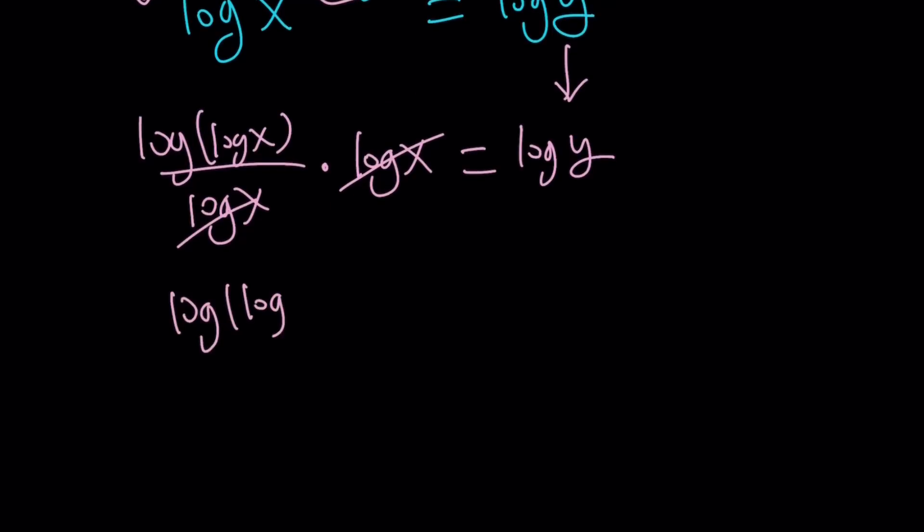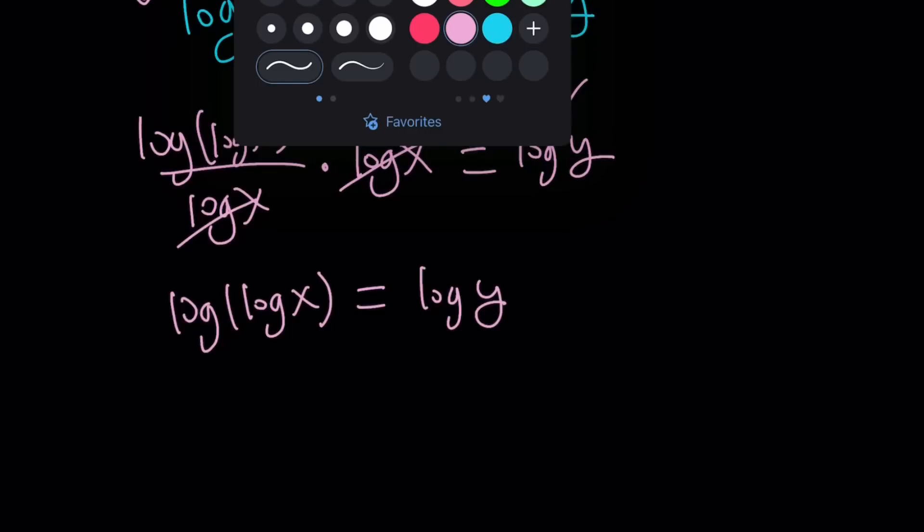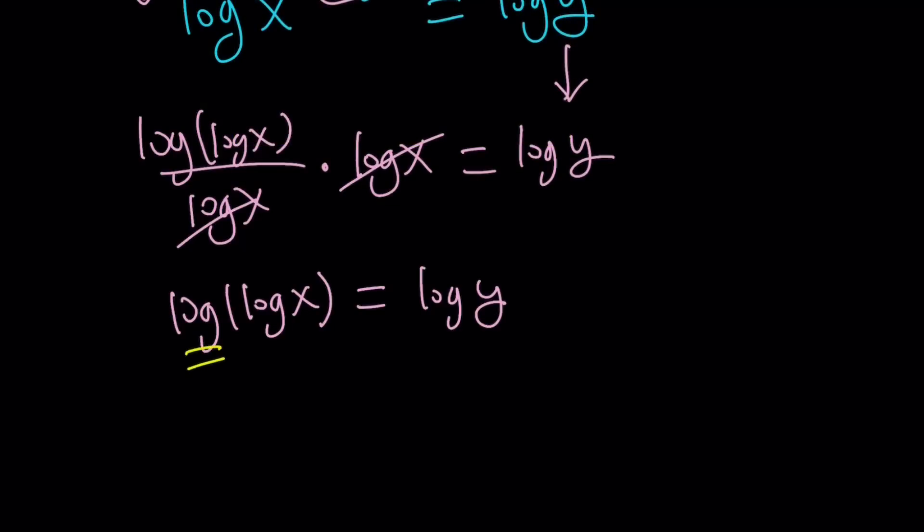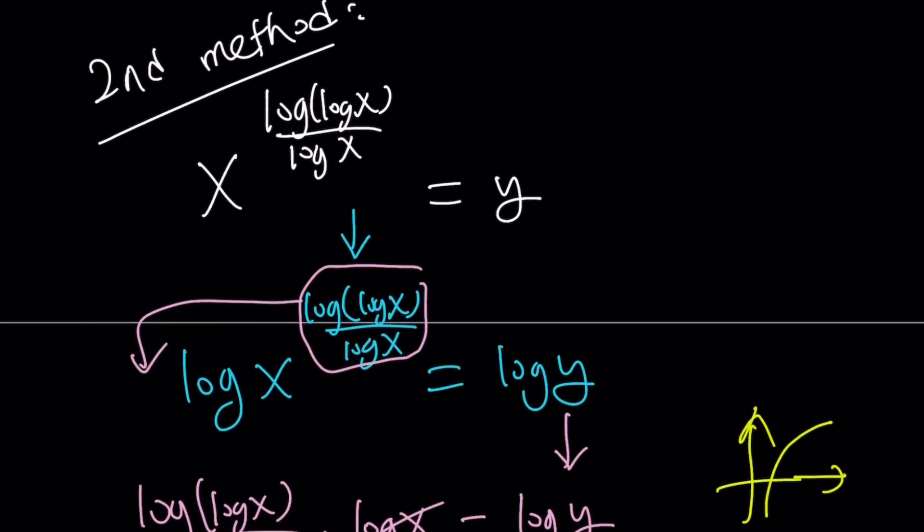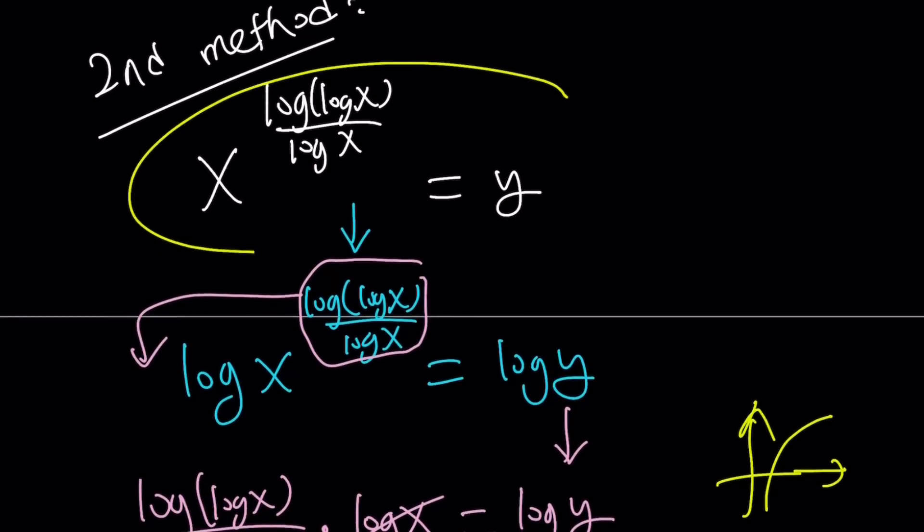Look at this: log of log x equals log of y. Now you can definitely forget about the logs here, because if log a equals log b, then b equals a, because log function, it's base 10, it's increasing. So we safely say that log x is the same as y, log x equals y. But the expression that I was trying to simplify, I called it y. So the answer is log x.